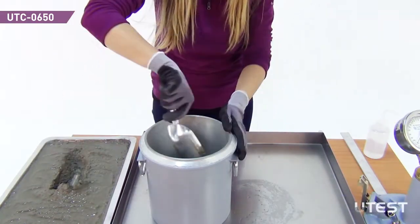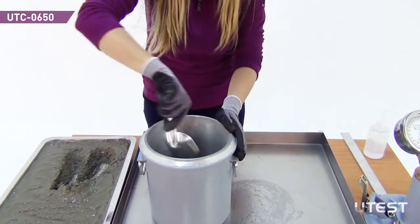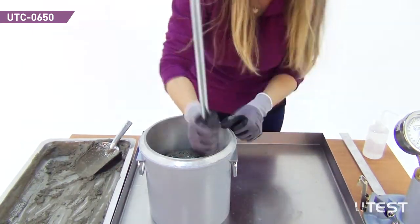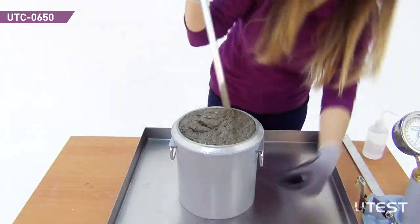Place the concrete in the measuring ball in 3 layers of approximately equal volume and rod each layer 25 times uniformly.